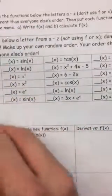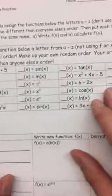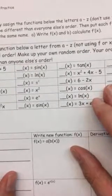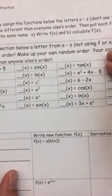What you're going to do is you're going to take these 24 functions. There's 24 functions here. And you're going to label them the letters A through Z, but you're not going to use F or X because that would be confusing. And you're going to put them in a random order.